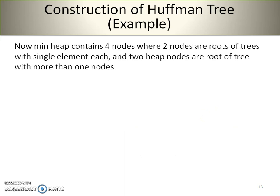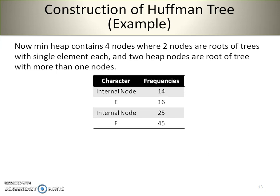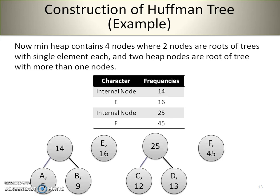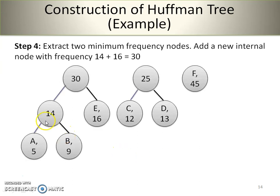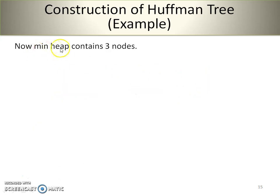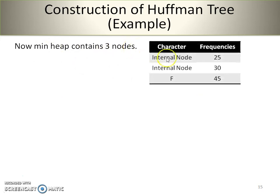After rearranging, all nodes are in ascending order again. The next step is to extract the next two minimum frequency nodes, 14 and 16, and add them to form a new internal node with frequency 30. The min-heap now contains only three nodes: internal node 25, internal node 30, and node F with frequency 45.